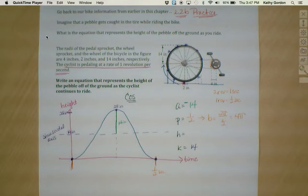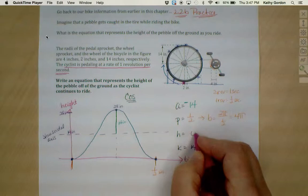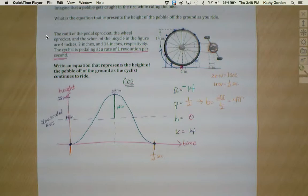For the h value, we're starting right here at a min point. There's no shift to the left or the right, and so we're just going to use zero there.